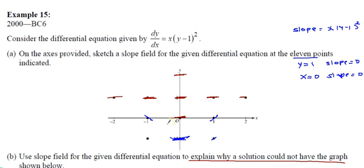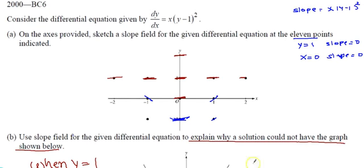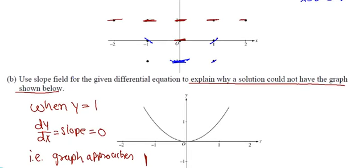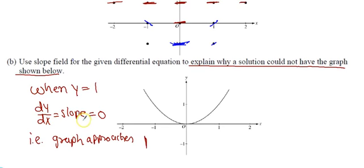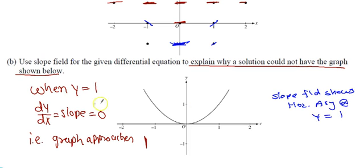Part B: Use the slope field to explain why a solution could not have the graph shown. The graph shown is a parabola — as x goes to infinity, y also goes to infinity. The explanation is that when y equals 1, slope should be 0, meaning the solution should have a horizontal asymptote at y=1. The given graph has no horizontal asymptote, so it cannot represent this slope field's solution curve.